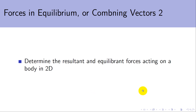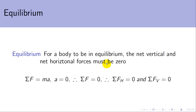A quick reminder of what equilibrium is, which we mentioned when we were talking about Newton's first law in the Newton's laws video. For a body to be in equilibrium, the net vertical force and the net horizontal force must all be zero. Newton's second law says that sigma F equals ma. And if we want a to be zero — the body not accelerating anywhere — then sigma F has to be zero, meaning both the horizontal forces must sum to zero and the vertical forces must sum to zero.